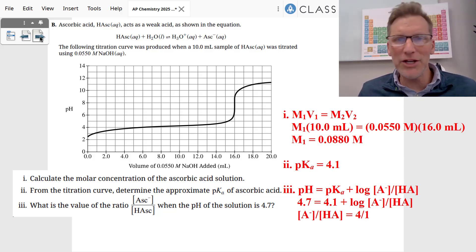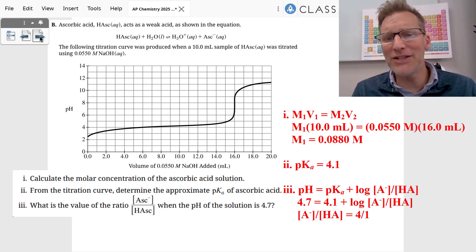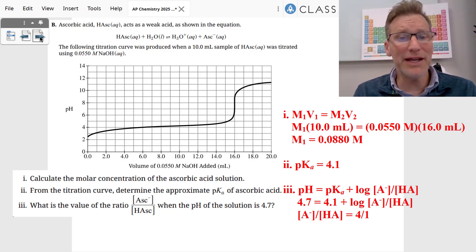And then they want to know the ratio of our conjugate base to our weak acid. Well, we're going to use Henderson-Hasselbalch. pH equals pKa plus the log of that ratio. And if the pH is 4.7, you know you have more conjugate base than you do the weak acid. So you do that algebra, 4.7 minus 4.1 through the opposite of log, which is 10 to the, and that gives us approximately a 4 to 1 ratio.